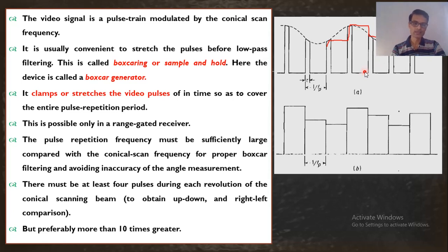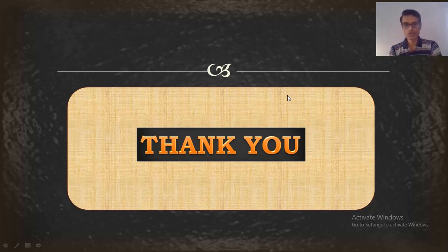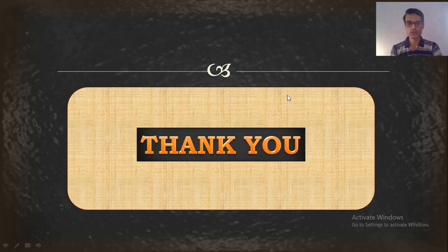In this video I explained conical scanning and sequential lobing. The difference is that sequential lobing uses four or five feed horns, while conical scanning uses only one feed horn rotated in all directions — up, down, right, and left — to calculate azimuth angle error as well as elevation angle error. Thank you for watching.